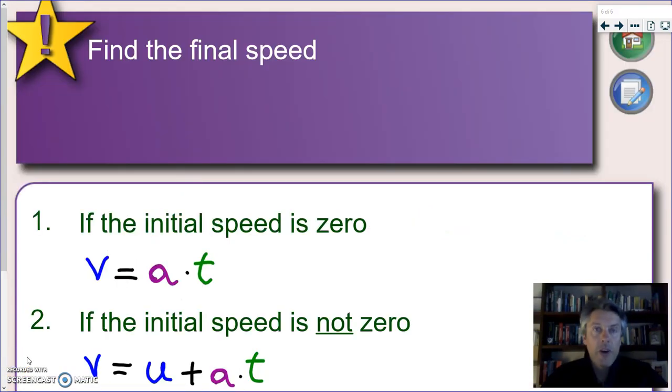So far we've seen how we can find the acceleration of an object if we know the initial speed, the final speed and the time taken. On the other hand, you will find problems when they're going to ask you, you know the acceleration of the object, you know the time it takes to go through this acceleration. It might even give you the initial speed. Find the final speed, the speed at the end of this acceleration period.